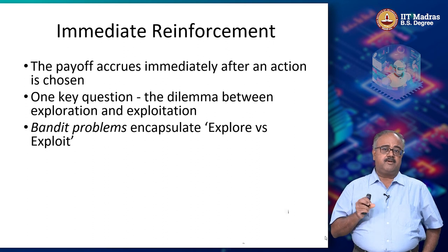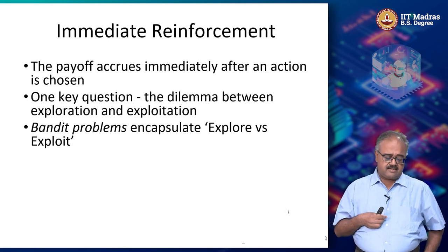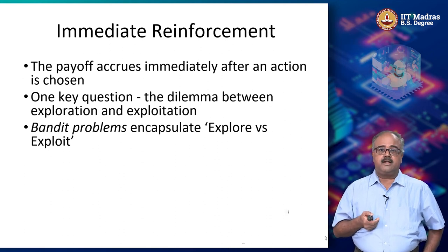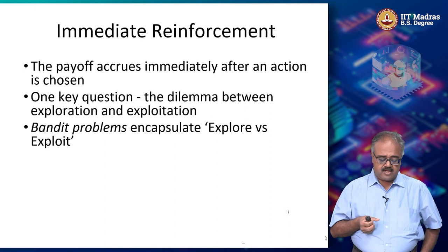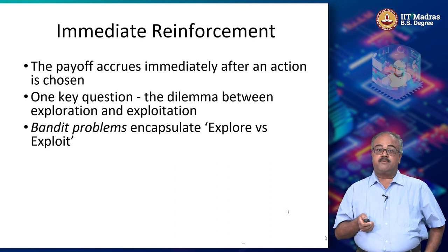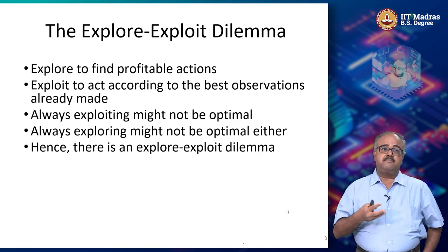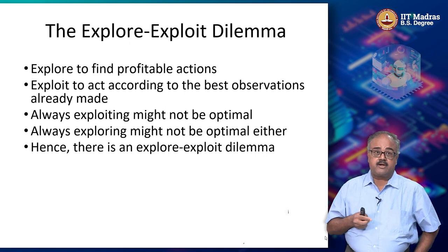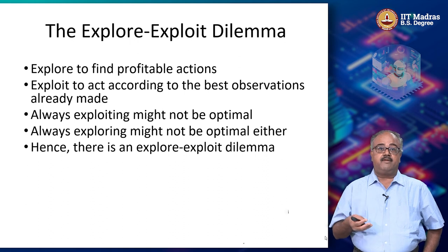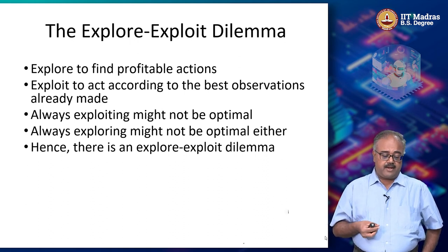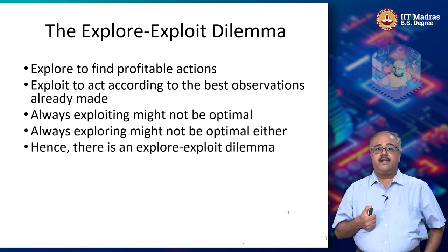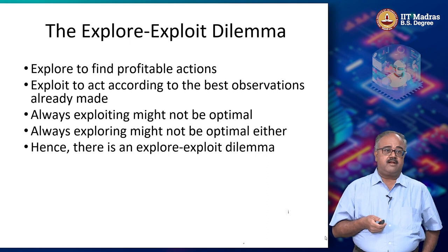This kind of immediate reinforcement learning problem is formulated as what are called multi-arm bandit problems, or bandit problems — MABs, as they are popularly called. They are essentially trying to solve the explore-versus-exploit question. To summarize the explore-exploit dilemma: you explore to find which actions are profitable in terms of getting a good payoff. And you exploit by acting according to the best observations you have already made.